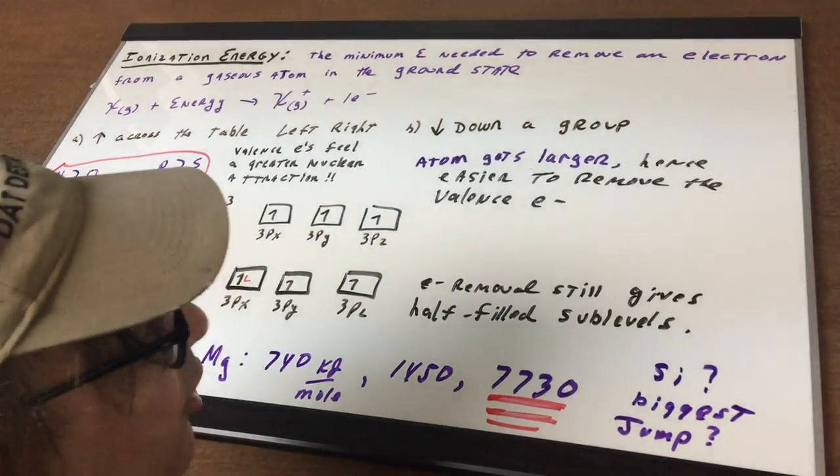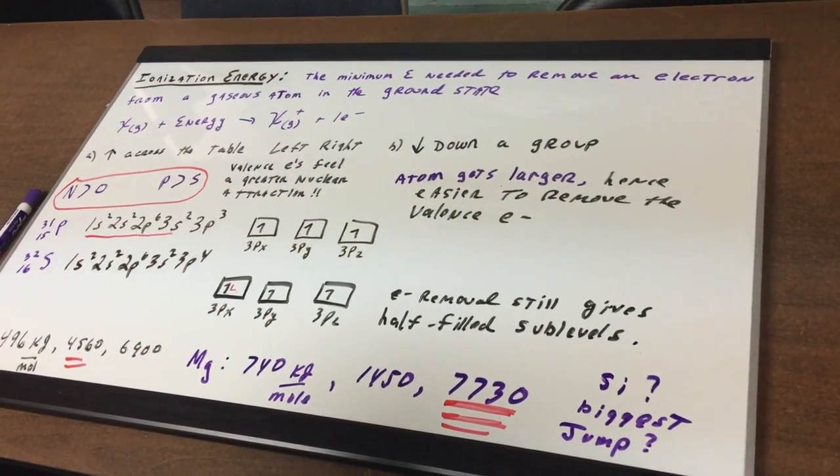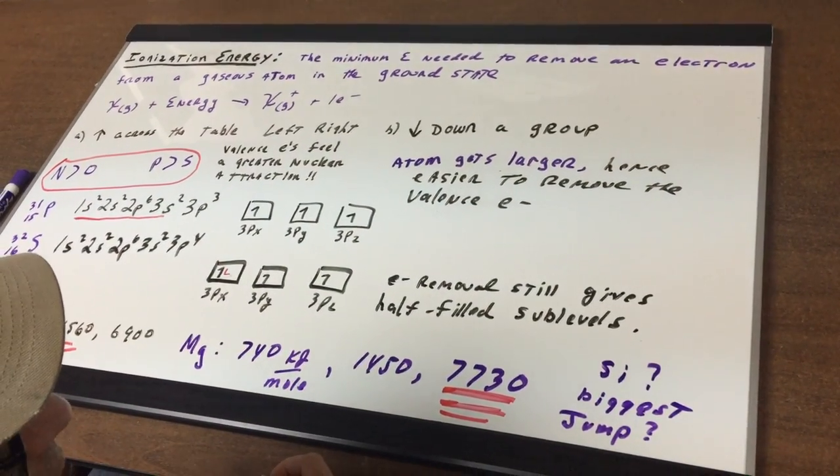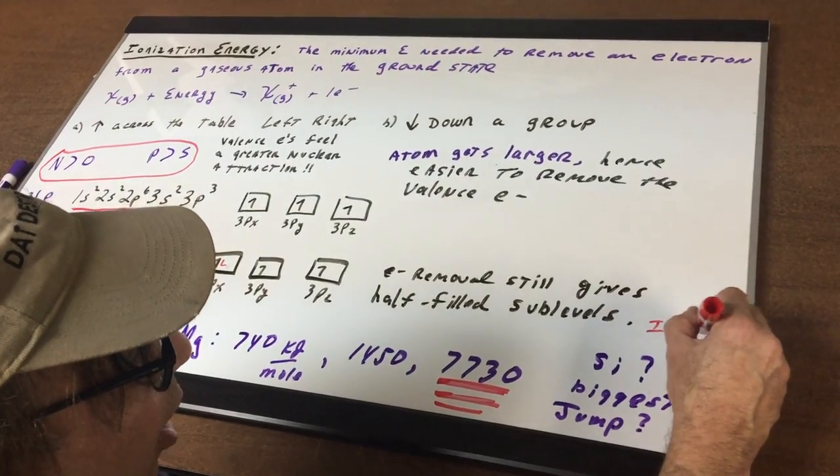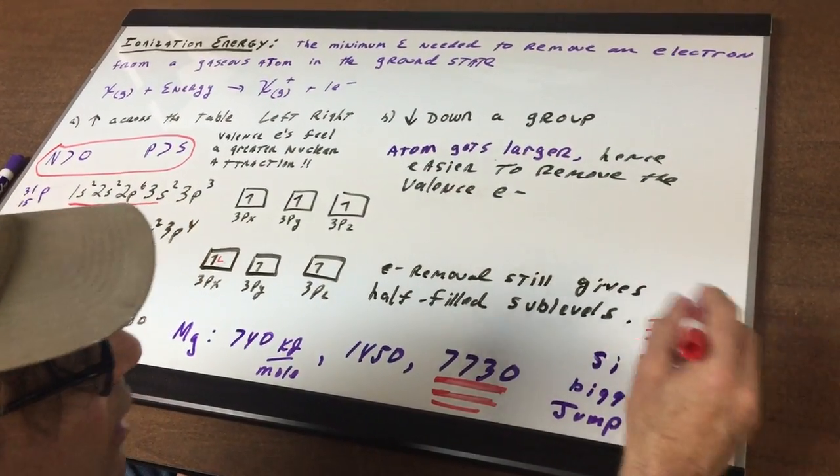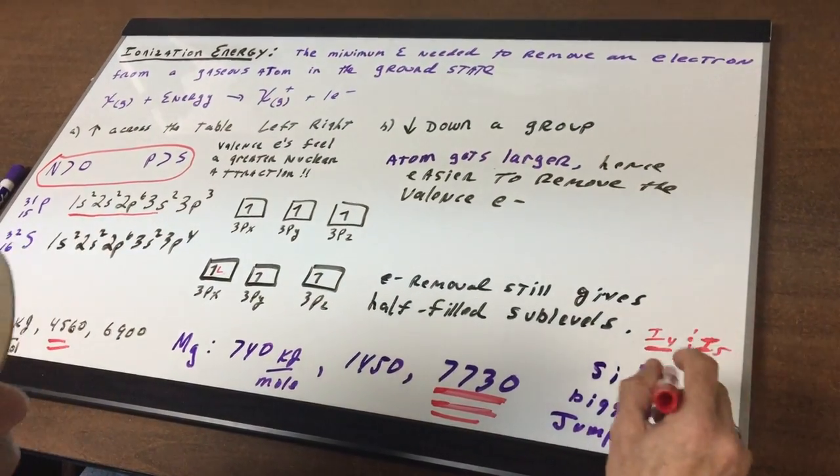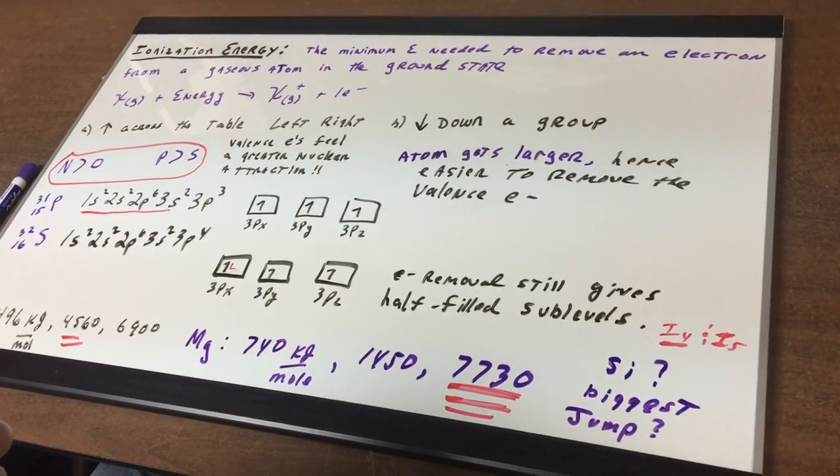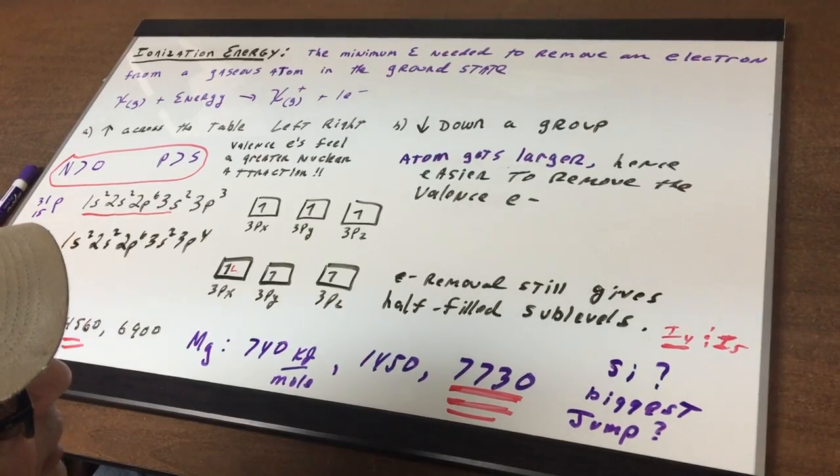How about silicon? What do you think? Silicon is in group 14. You can think of silicon as four loose teeth. So that means that the biggest jump would be between what? I4 and I5. The first four would be easy. That fifth one would be very, very high. So the biggest jump would be between I4 and I5, where the I5 being significantly greater than those first four.